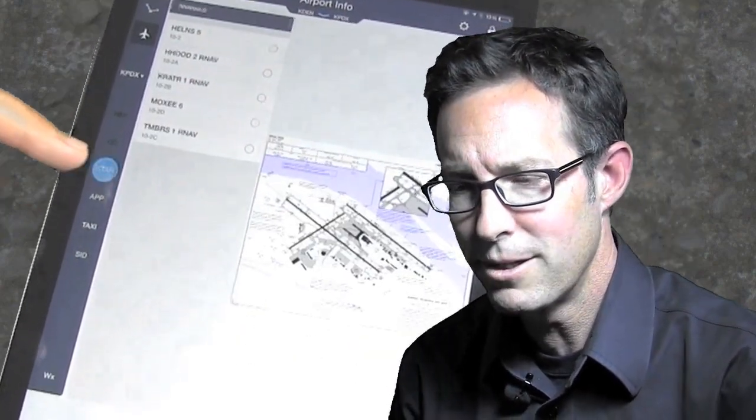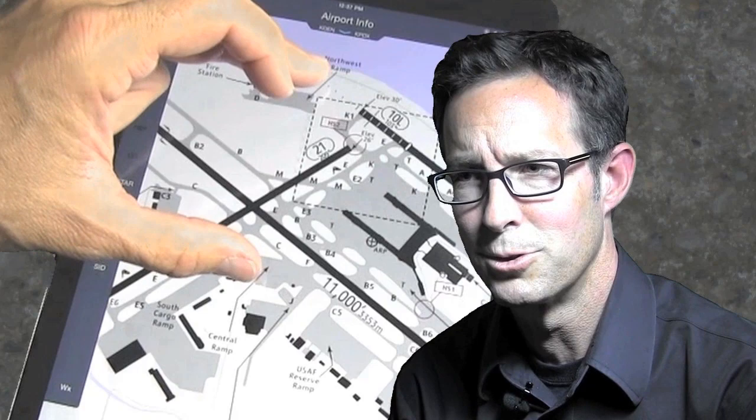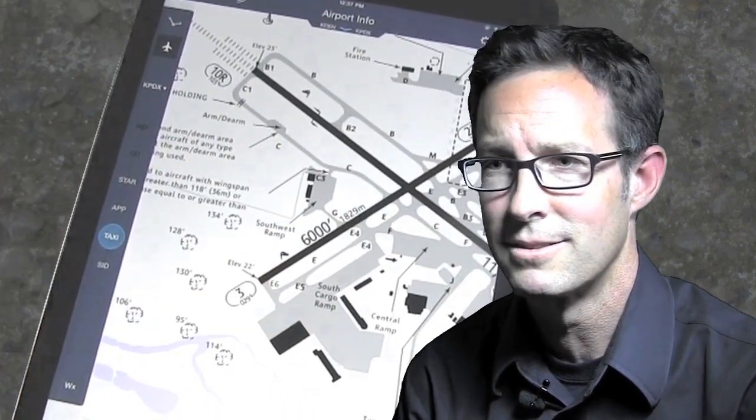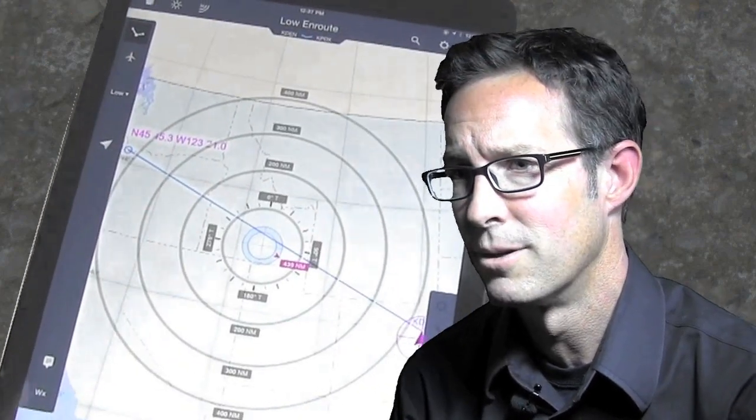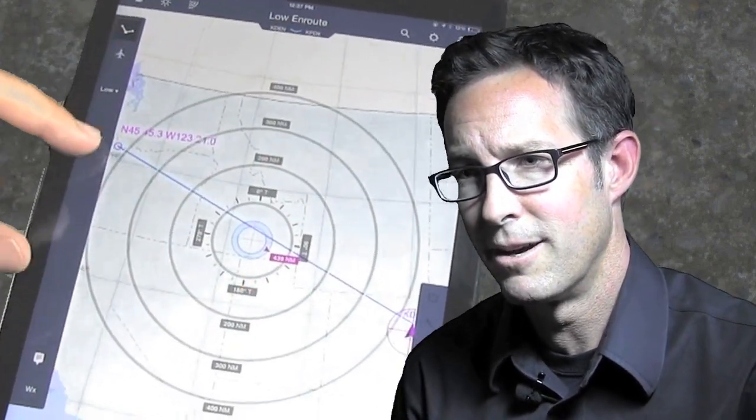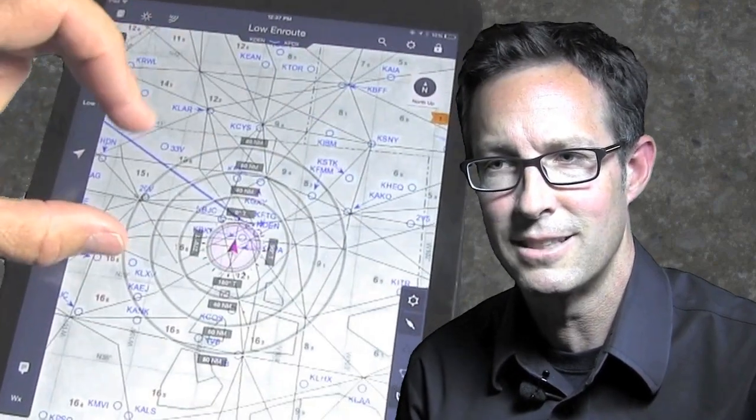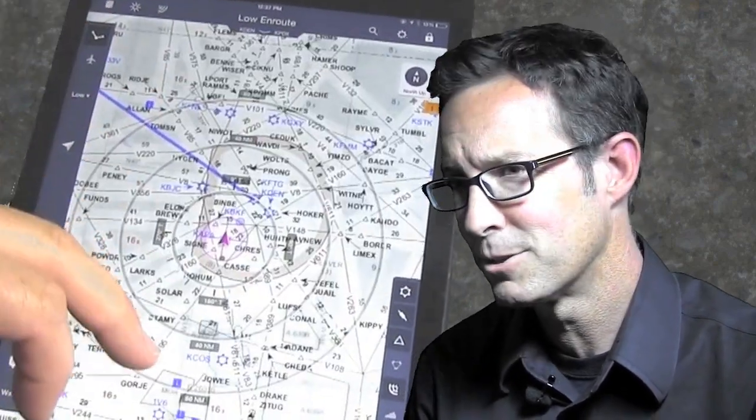When you put a lot of features and functions into a solution, it makes it very difficult to remember where something is. It makes it very complex to use the application over time. So we've created a very shallow navigation, one where it's very easy to access the primary functions. And here's what that looks like.